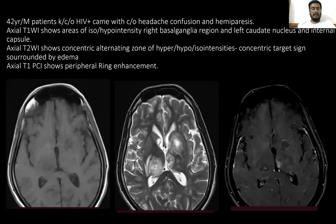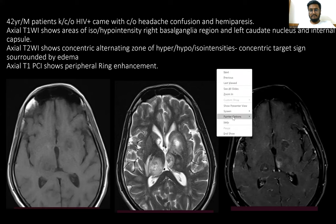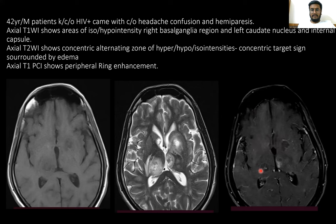Here is the first case: a 42-year-old male, known case of HIV, presenting with headache, confusion, and hemiparesis. On axial T1-weighted images, there is an area of hyper-intense lesion in the basal ganglia region, left caudate nucleus, and internal capsule. On axial T2-weighted MRI, there is a concentric alternating zone of hypo-, hyper-, and iso-intense signal, known as the concentric ring sign, surrounded by edema. On axial T1 post-contrast, perilesional edema and ring enhancement are seen.